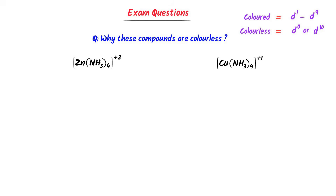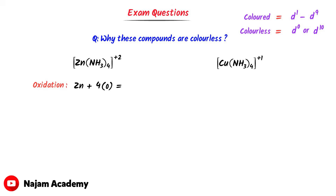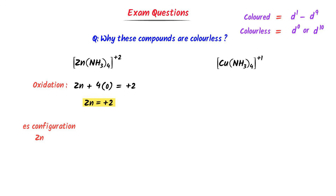In the case of the first compound, I find the oxidation state of the metal atom zinc. Writing zinc + 4×(0) = +2, I get zinc = +2. Thus the oxidation state of zinc is +2. The electronic configuration of zinc (atomic number 30) is [Ar] 3d¹⁰ 4s². The electronic configuration of Zn²⁺ is [Ar] 3d¹⁰, as the +2 charge means zinc has lost 2 electrons from 4s.